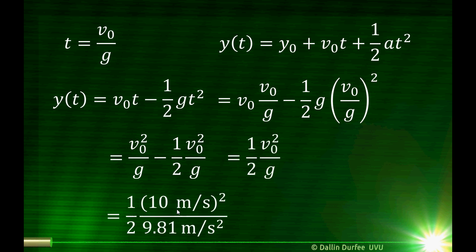I can plug my numbers in. v-naught was 10 meters per second, g is 9.81 meters per second squared — though g is actually a little different depending on where you are on Earth, 9.81 is a pretty good value to use, and that's what we'll be using for a lot of problems in this class. Plugging the numbers in, I find that my keys go 5.1 meters up.